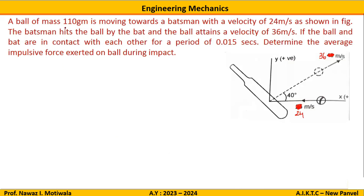The next question is: a ball of mass 110 grams is moving towards a batsman with a velocity of 24 meters per second. The batsman hits the ball with the bat and the ball attains a velocity of 36 meters per second. If the ball and the bat are in contact with each other for a period of 0.015 seconds, determine the average impulsive force exerted on the ball during the impact.